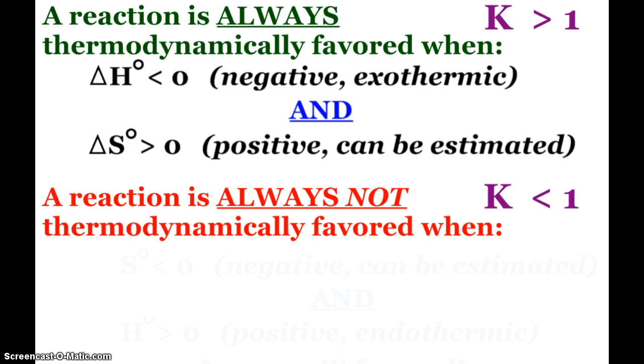And that, of course, can be estimated like we did the other day. Remember that a thermodynamically favored reaction, keeping our equilibrium constants in mind, that means that K is greater than 1. We would have more products in our equilibrium composition than reactants.